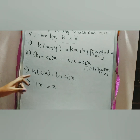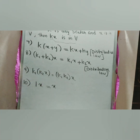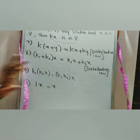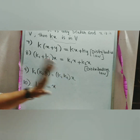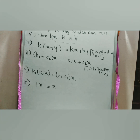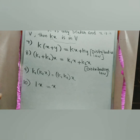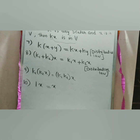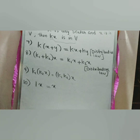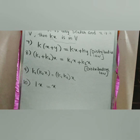Ninth property: k1 times (k2 times x) equals (k1 k2) times x. Tenth property: 1 times x equals x. If V satisfies these ten properties under vector addition and scalar multiplication, then V is a vector space.